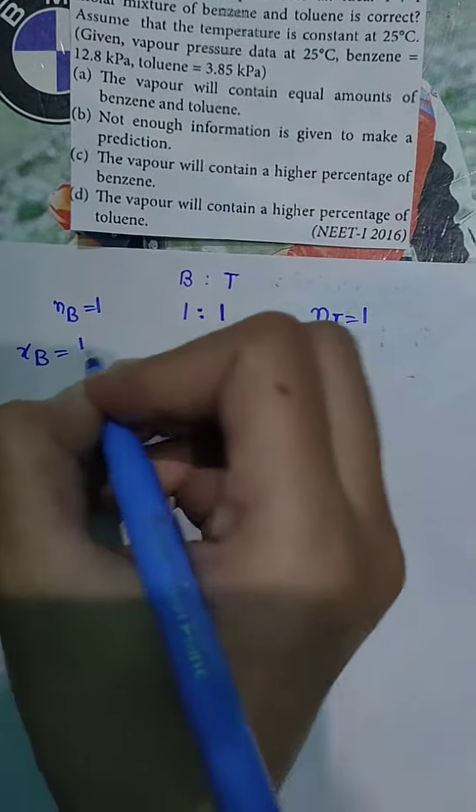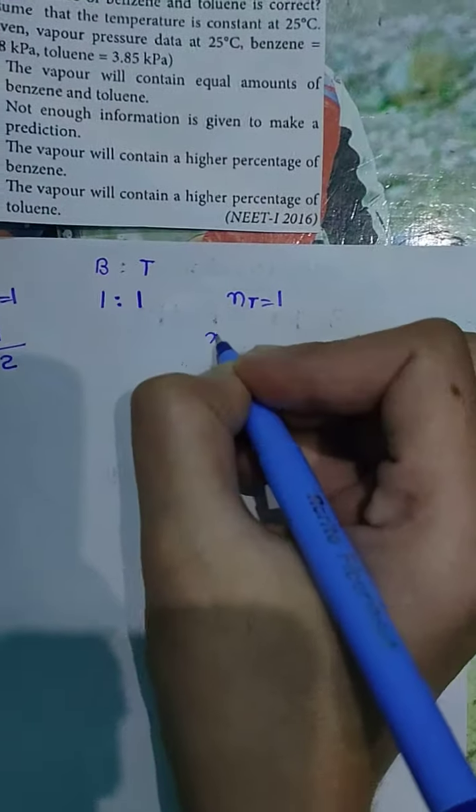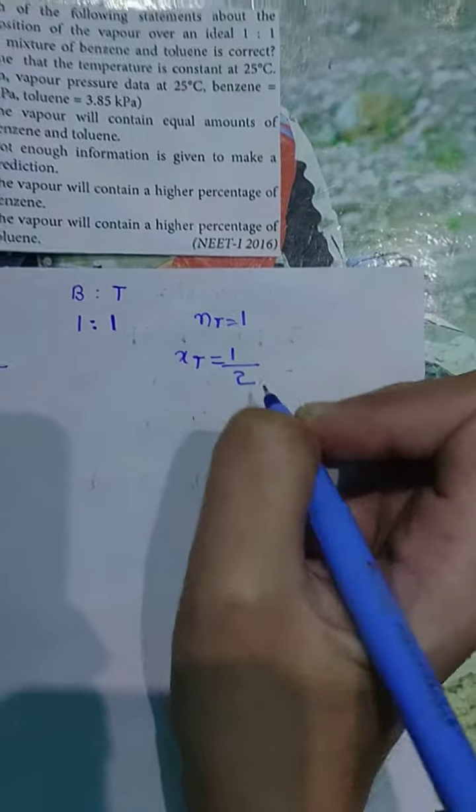Mole fraction of benzene is equal to 1 over total number of moles 2. Mole fraction of toluene is 1 over total number of moles 2.